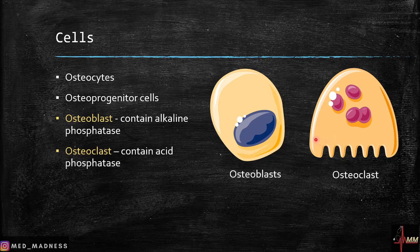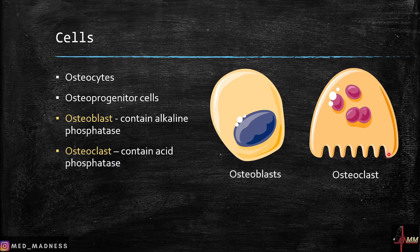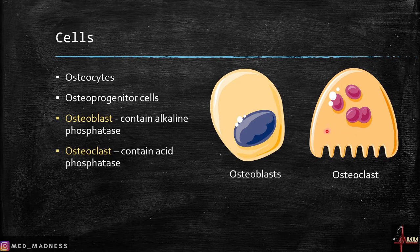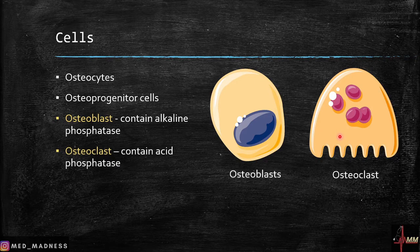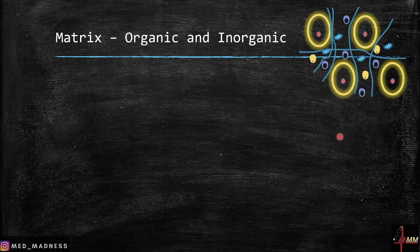If you compare the structure of these cells, the osteoclast is very different. Its surface has numerous folds and it also has many nuclei. Osteoblasts are bone-forming cells; osteoclasts are bone-destroying cells. Now let's move on to the matrix.